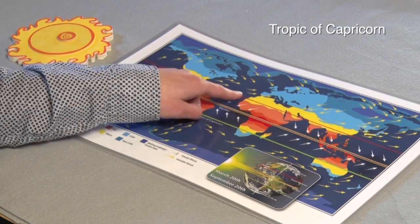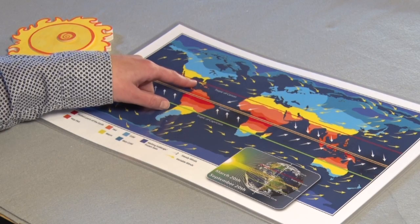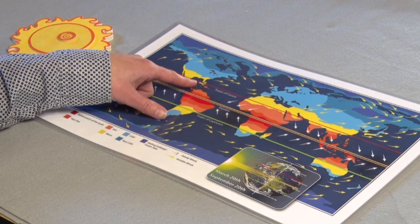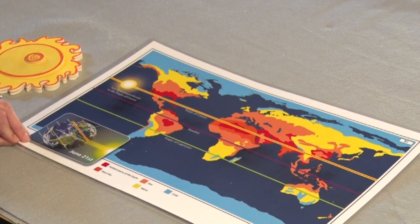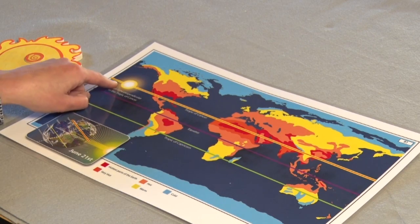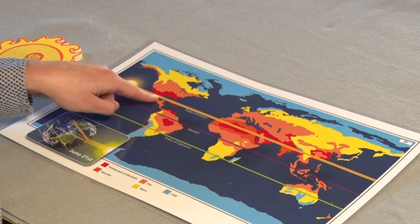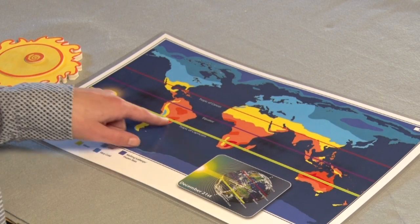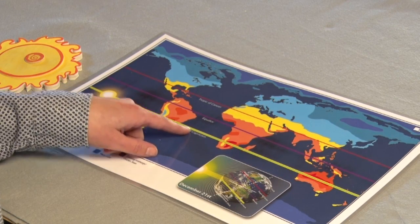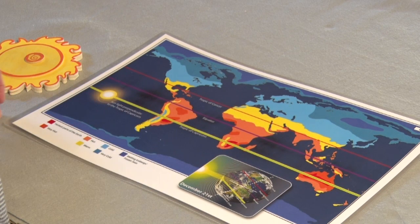The Tropic of Cancer is an imaginary line that shows us the northernmost point where the Sun will reach the Earth with perpendicular rays. The Tropic of Capricorn is the southernmost point where the Sun's rays will reach the Earth at a perpendicular angle.